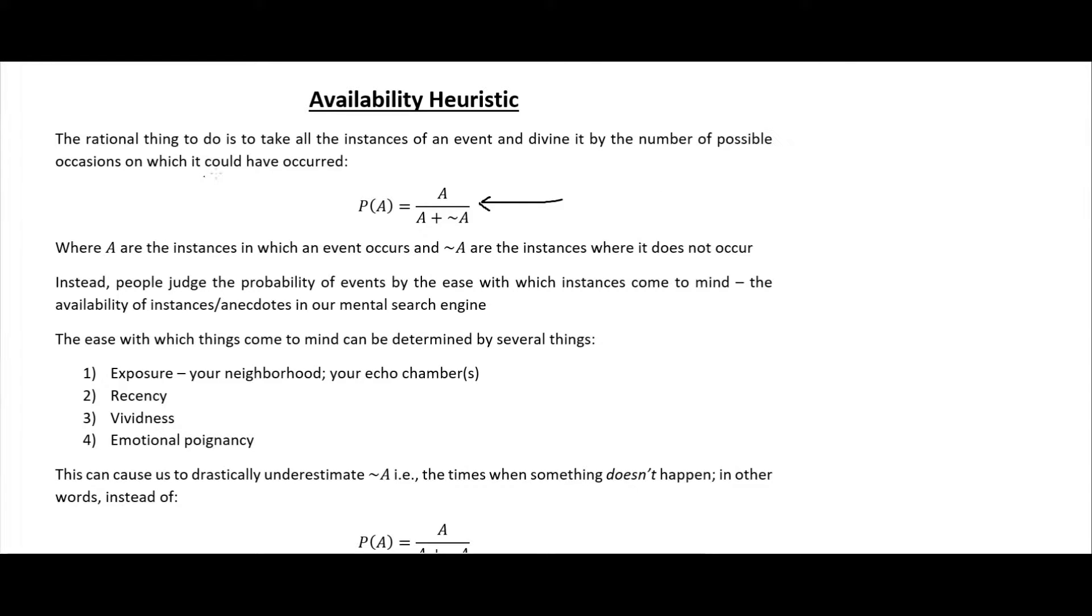The rational thing to do would be to take all the instances of an event and divide by the number of possible occasions in which the event could have occurred. So the possible occasions are the times that it did occur plus the times it did not occur.